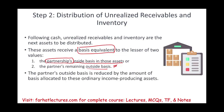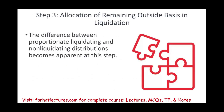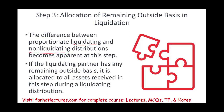Remember, our goal is to bring your outside basis down to zero. The third step is where liquidating and non-liquidating distributions differ — the difference becomes apparent at this step. If the liquidating partner has any remaining outside basis, whatever that outside basis is, it's allocated to all assets received in this step during the liquidating distribution. Why? Again, we want the outside basis at this step to go down to zero.